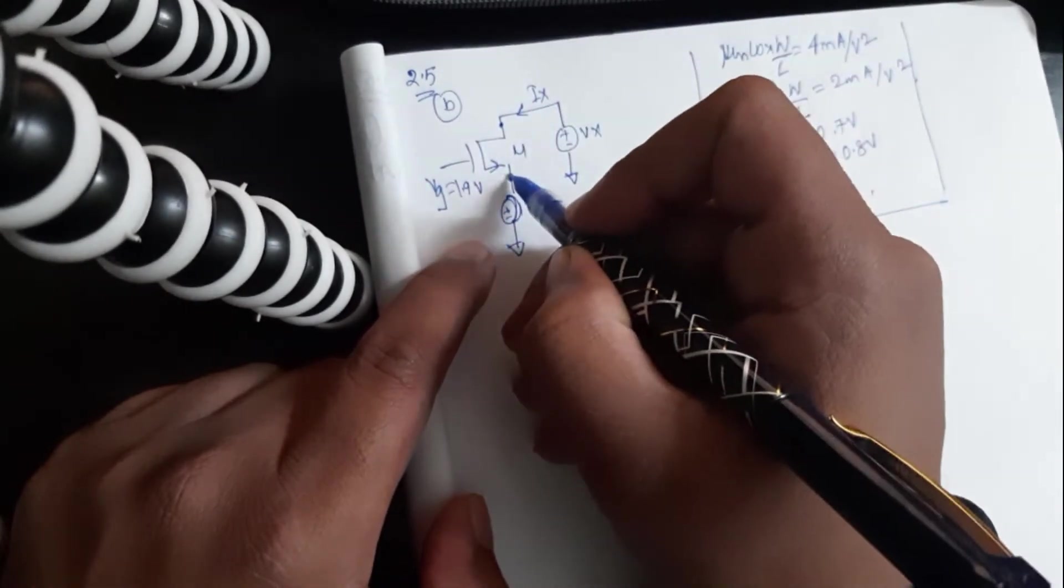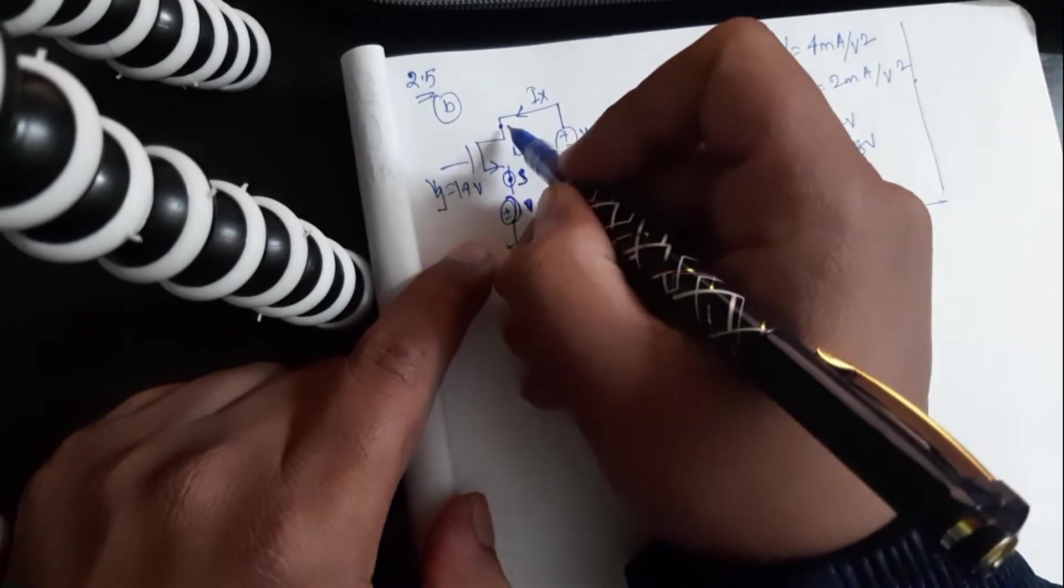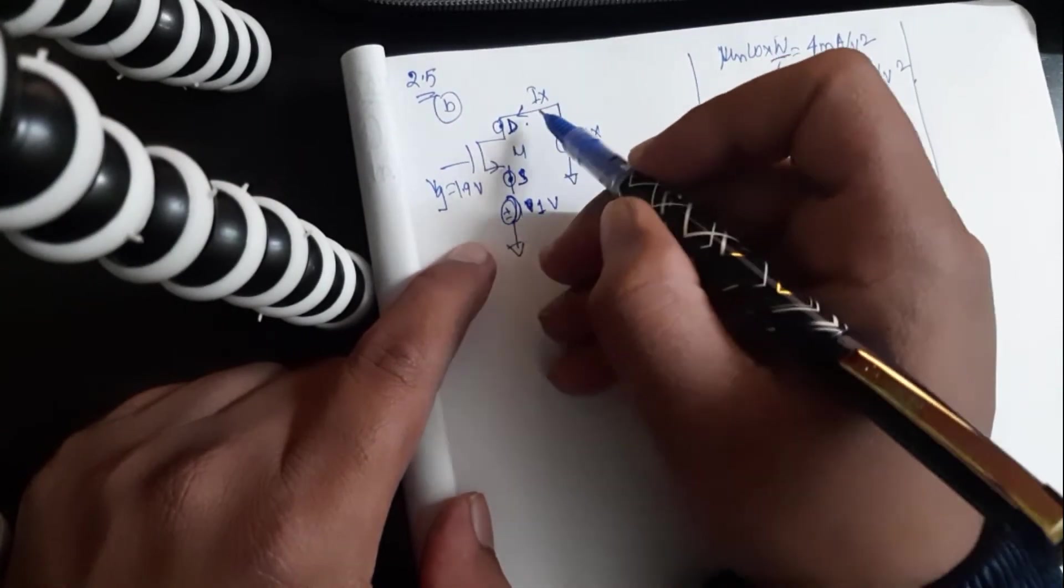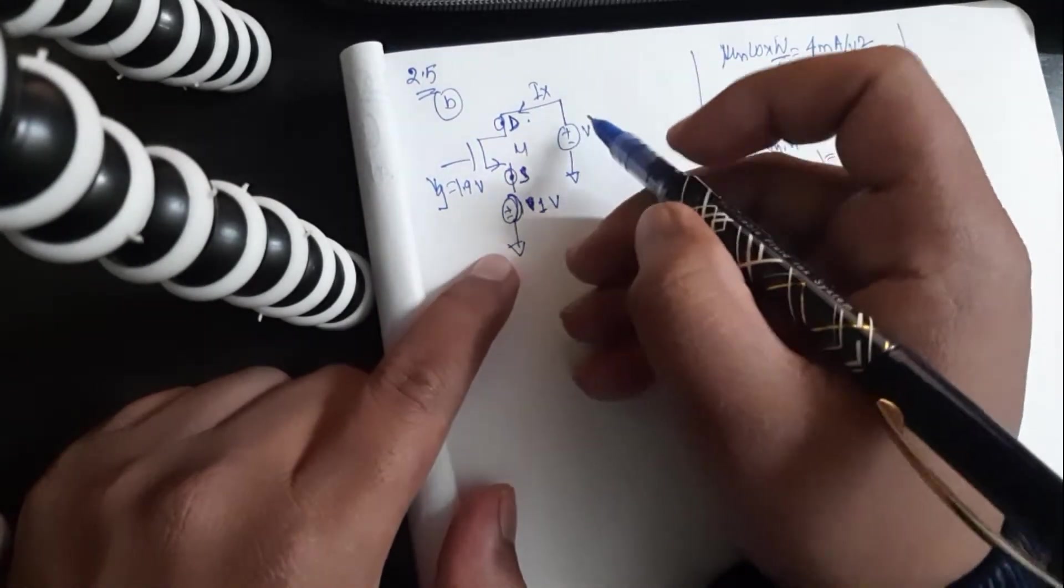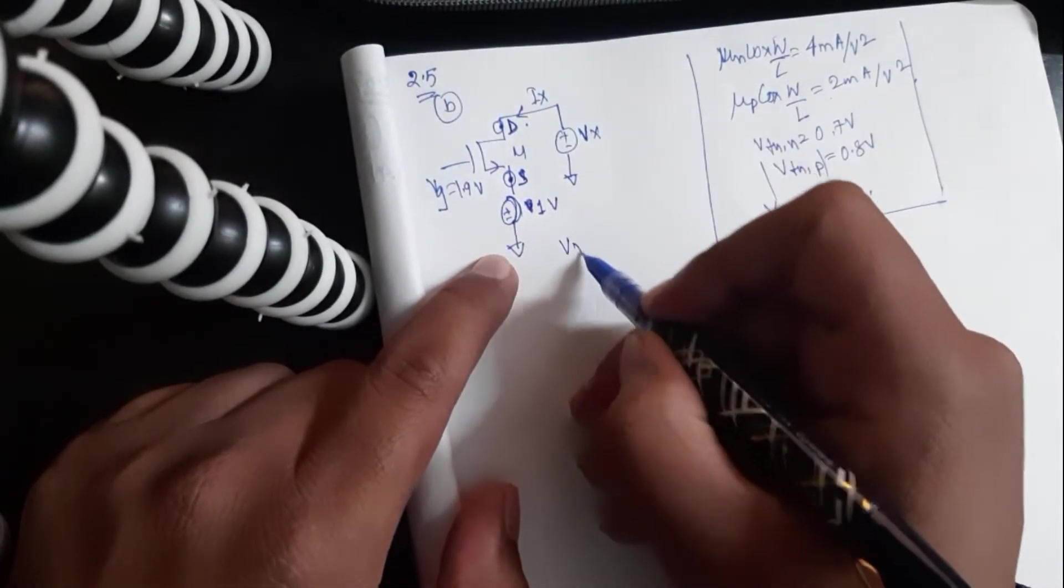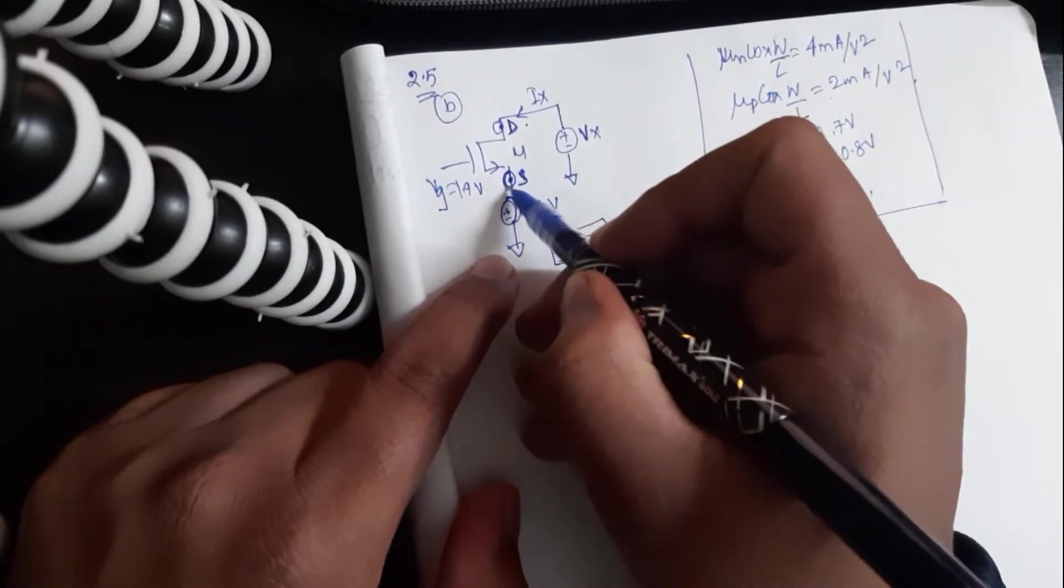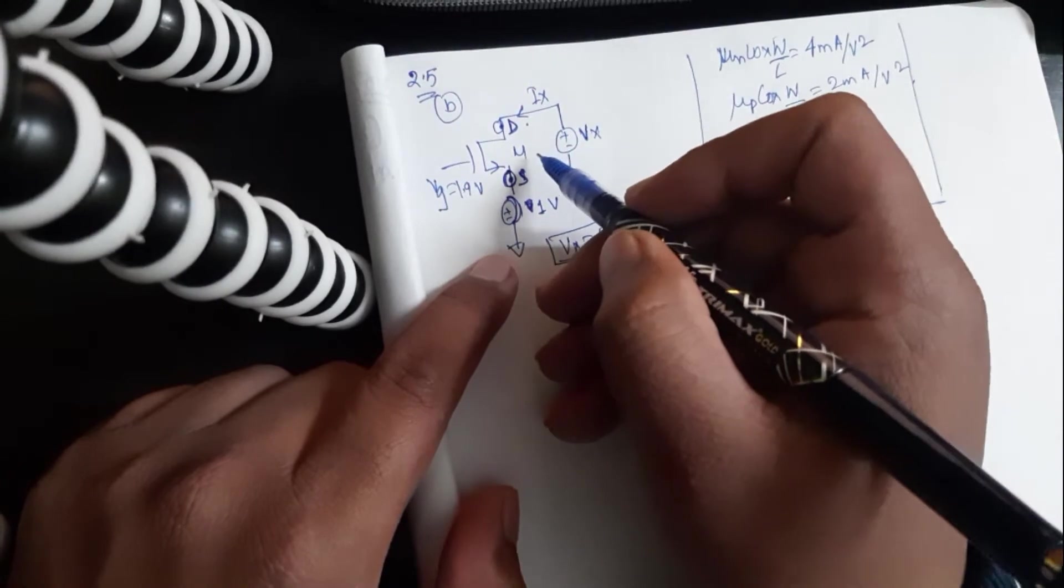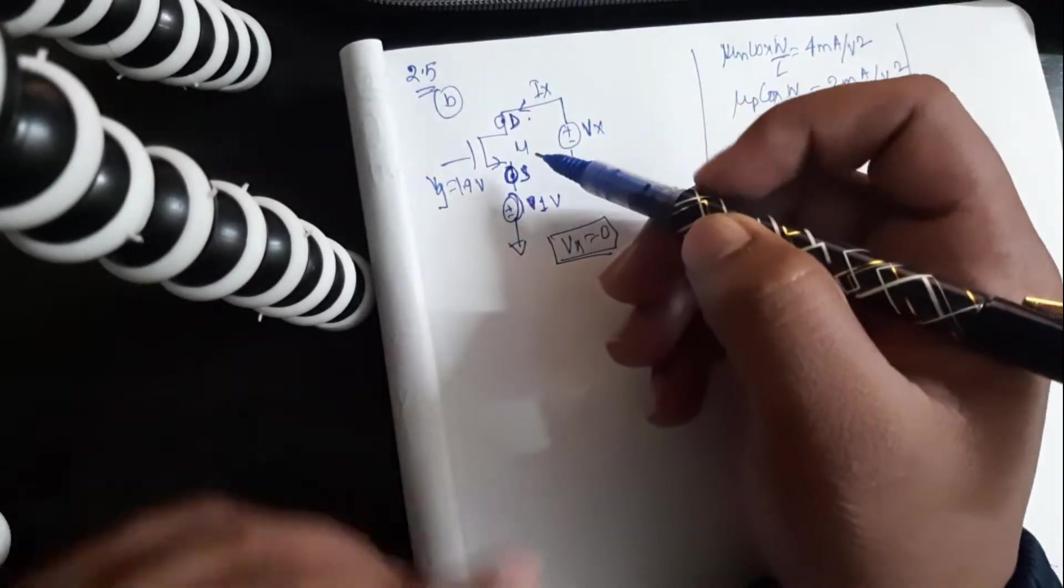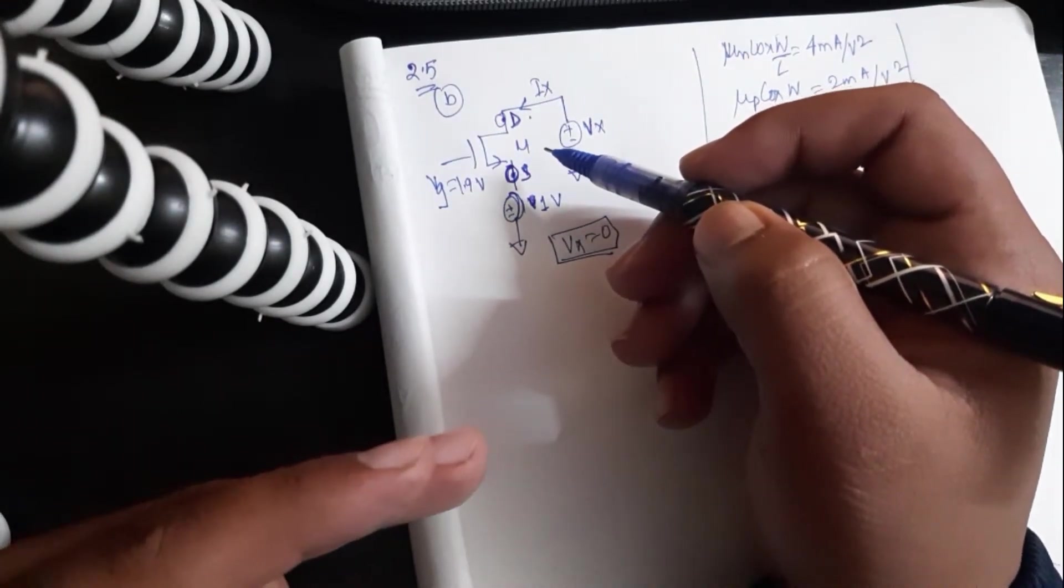So from the look of it, we will first say that this is the source and this is the drain. But this is a bit more complicated than this. When Vx is 0, this is no longer the source. Because source is something to which the current goes from the drain.